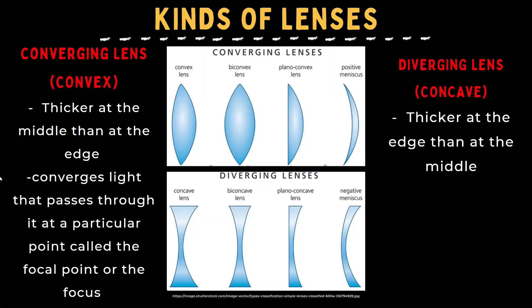What are the kinds of lenses? We have two kinds: the converging lens and diverging lens. What is converging lens? Converging lens is convex and is thicker at the middle. If you notice, the thicker part of the lens is at the middle than at the edge. And it converges light that passes through it at a particular point called the focal point or the focus.